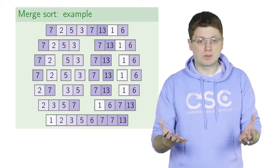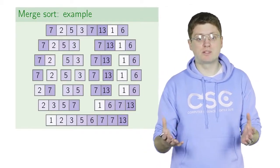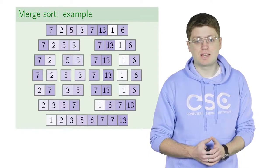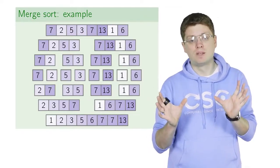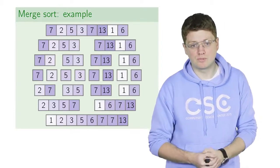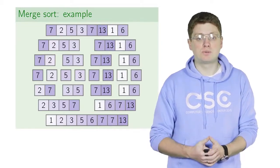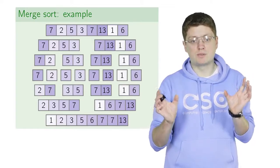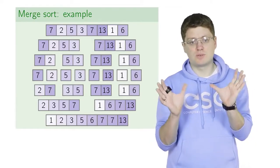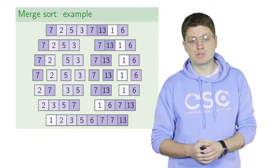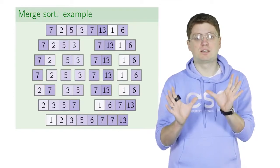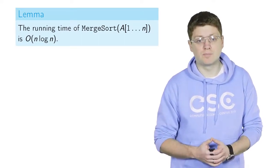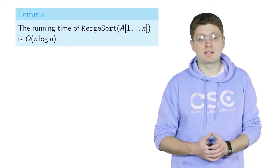Here is how sorting the initial array of size 8 by the merge-sort algorithm looks. The algorithm first splits the array of size 8 into two arrays of size 4. Each array of size 4 is split into two arrays of size 2, and each of those into two arrays of size 1. Then the merge procedure merges arrays of size 1 into arrays of size 2, then into arrays of size 4, and finally merges the two arrays of size 4 into the resulting array of size 8. We will now prove that the running time is O(N log N).